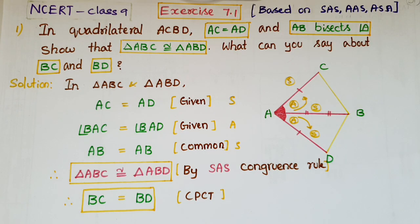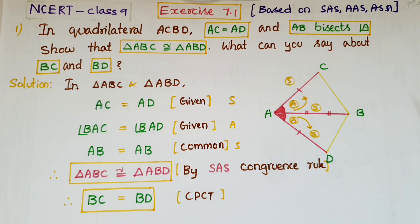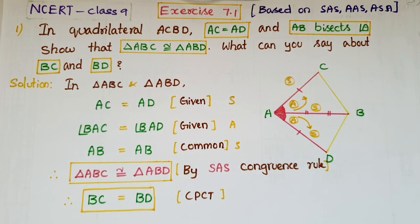Hello everyone, today I am going to tell the solutions of exercise 7.1 from NCRT class 9. These problems are based on SAS, AAS, and ASA congruence criteria.